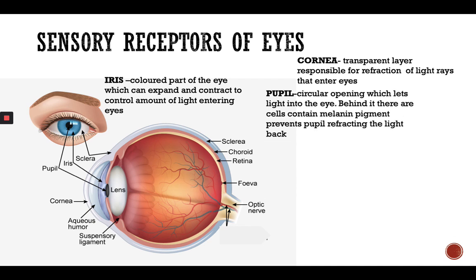The pupil is the small black part of the eye — a circular opening which lets light in. You might ask why it appears black: because behind it, cells contain melanin pigment that prevents light from reflecting back. That is why it appears black — it doesn't reflect light.